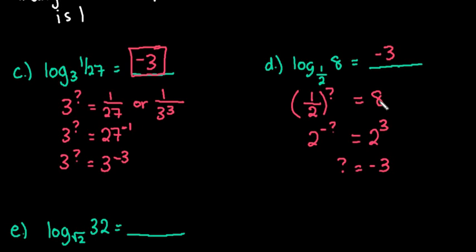So in order for a fraction to become a whole number you do have to take it to a negative value because that gives you the reciprocal. So negative 3 would be our answer for that one.